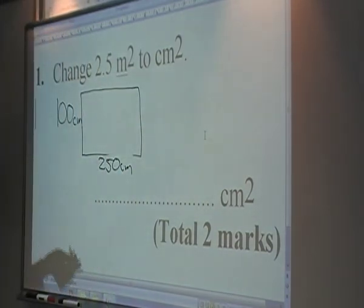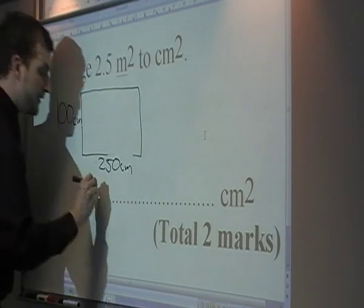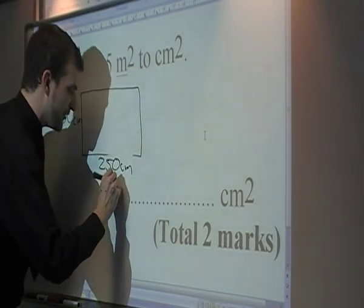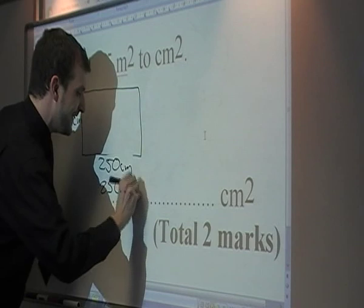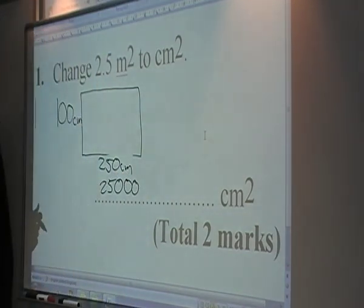And then when we multiply the two together to find the new area, it would be 25,000 centimetres squared.